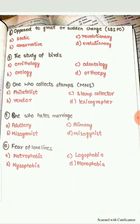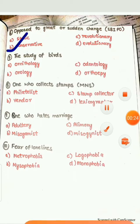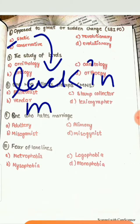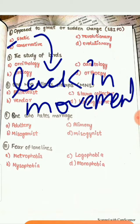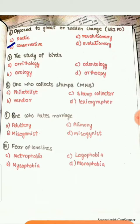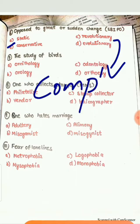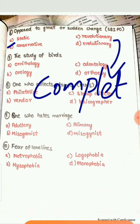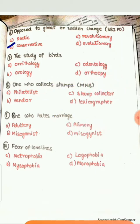The correct answer is B. Conservative. Static means lack of movement — it means 'still.' Revolutionary means involving a complete change — 'krantikari.' Evolutionary means 'vikaswadi' (progressive/developmental).